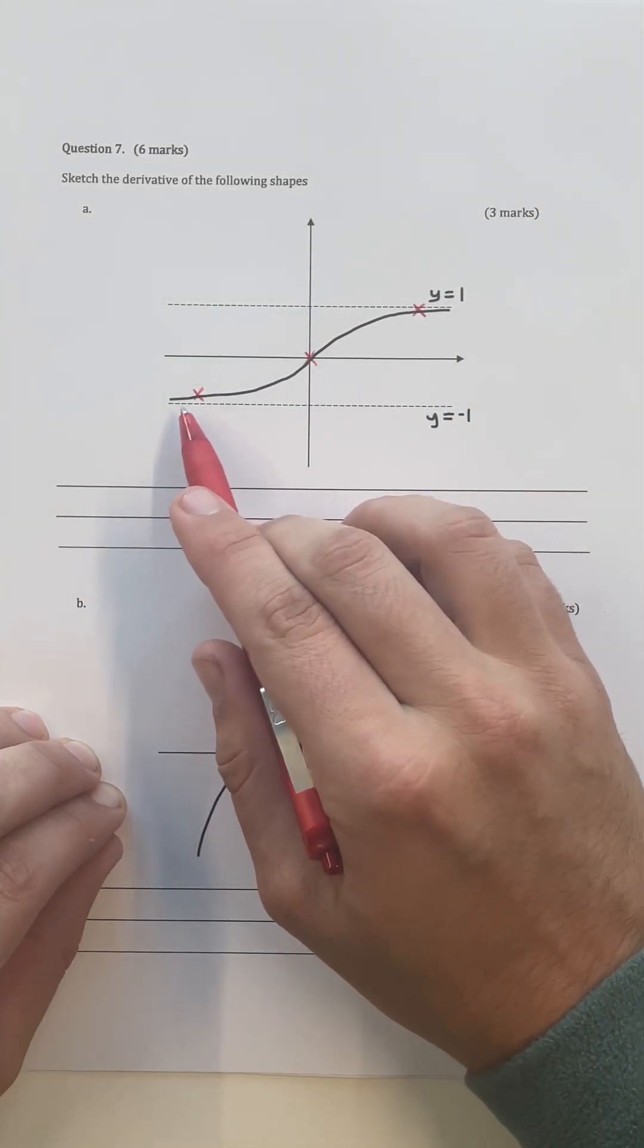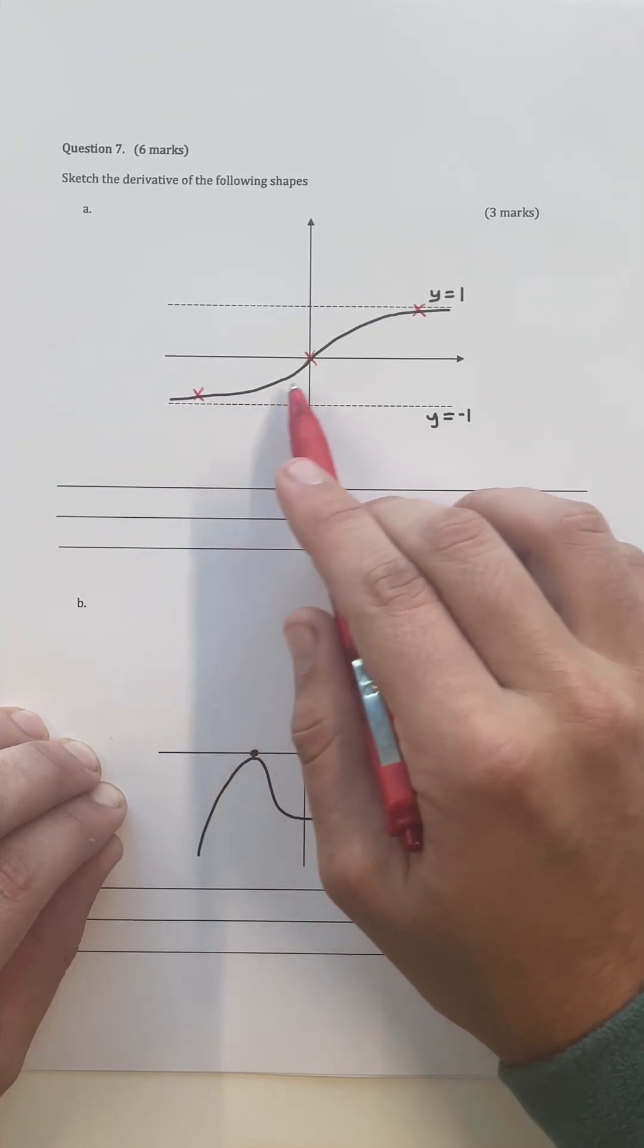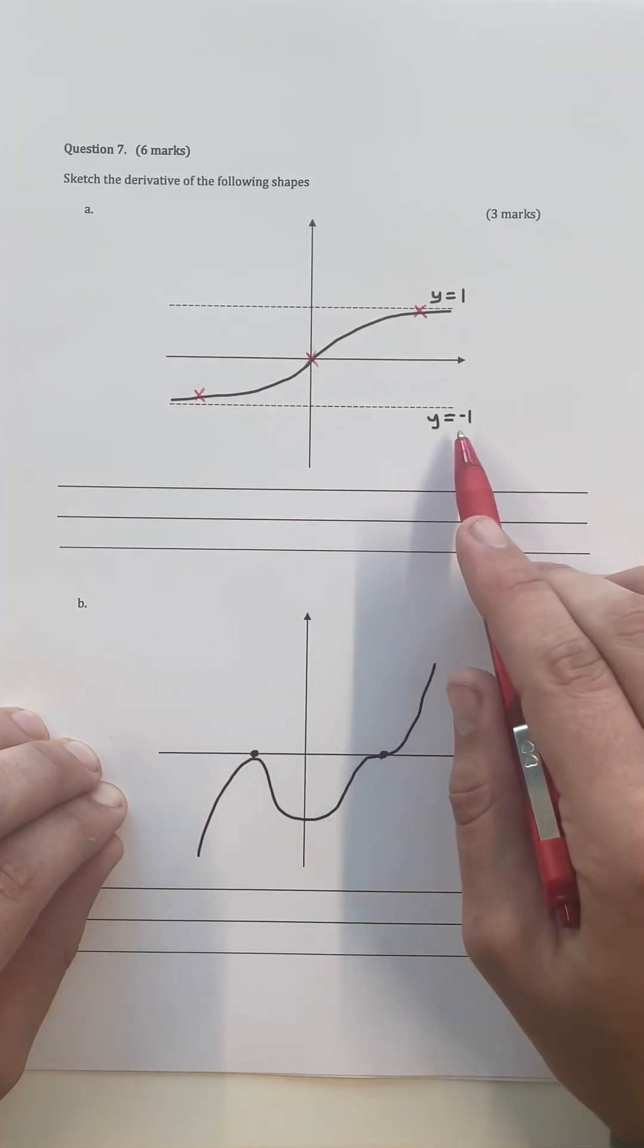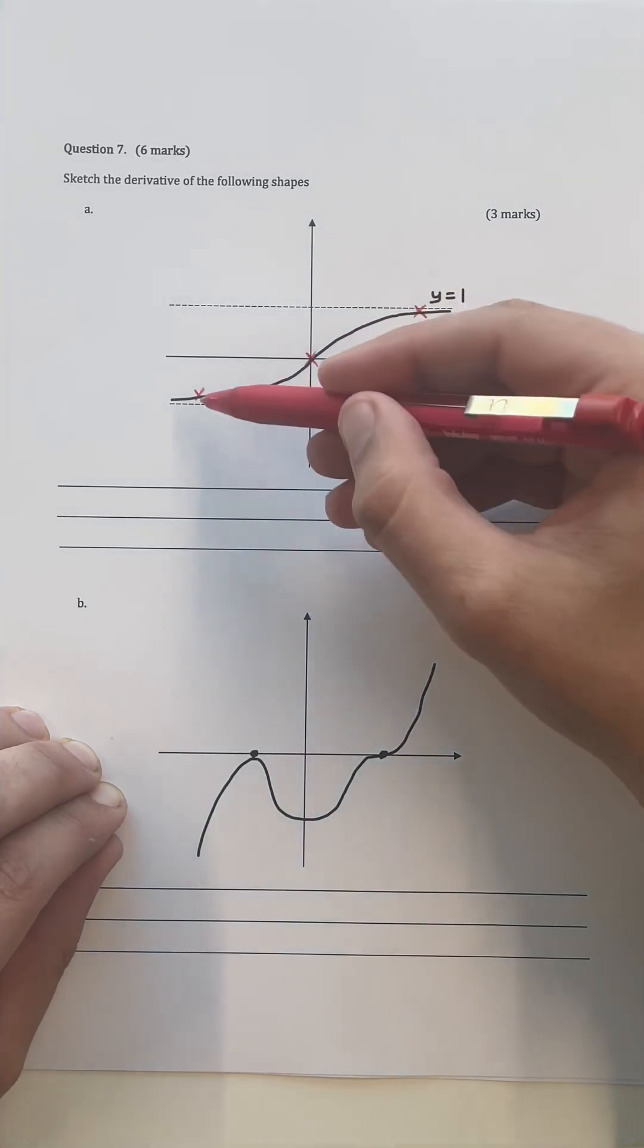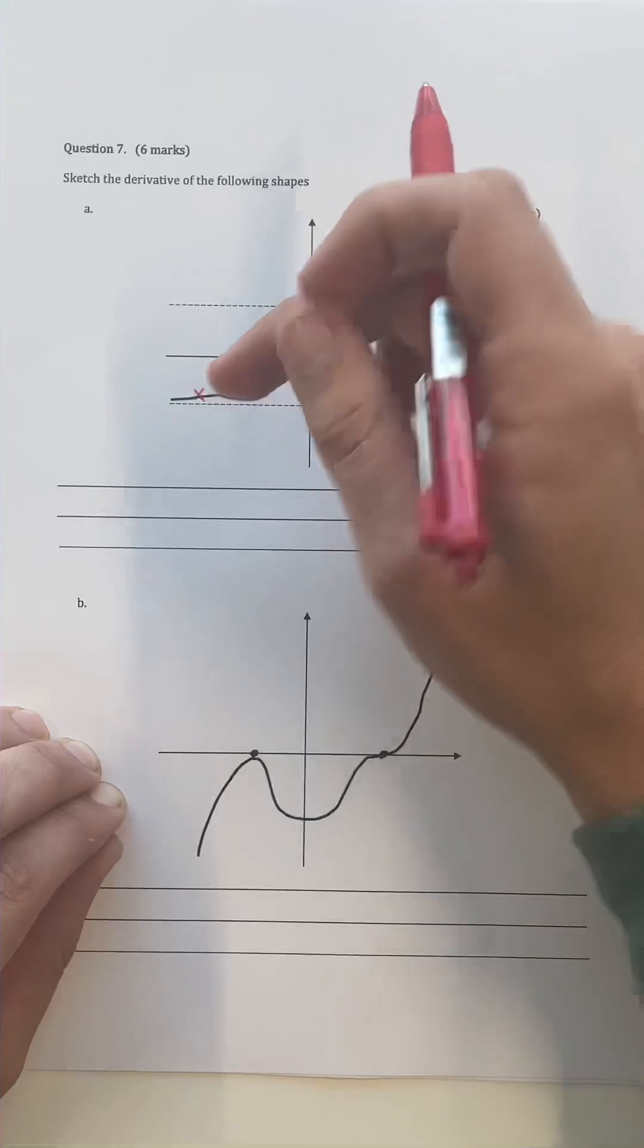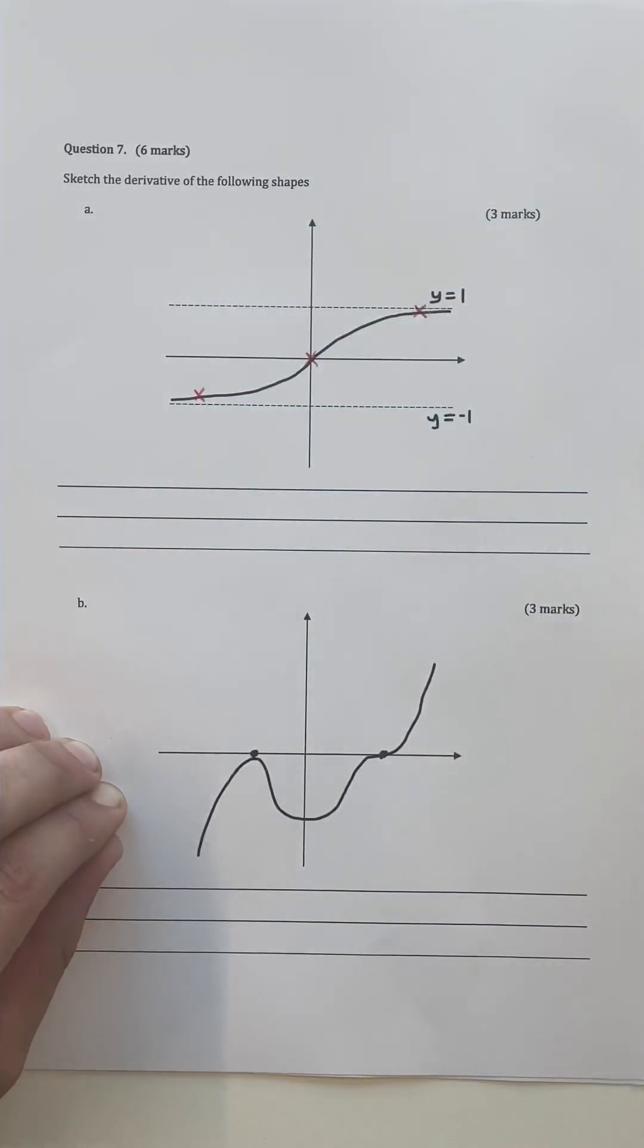So as we start from x approaching negative infinity and going to the right, we can see that we have an asymptote of y equals negative one. But it doesn't actually matter what this value is. What you can see is that the derivative is going to be a very small value because we're tending towards that asymptote there.